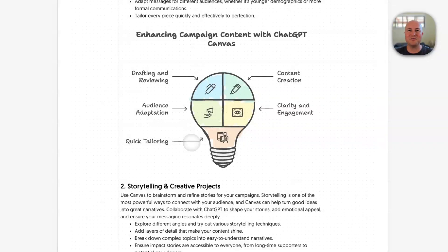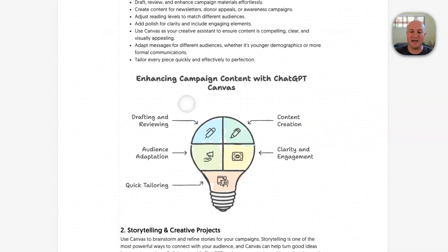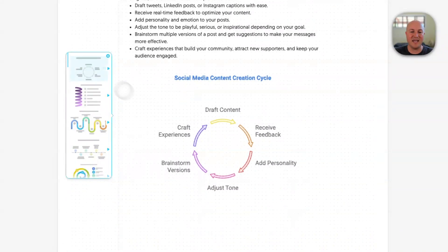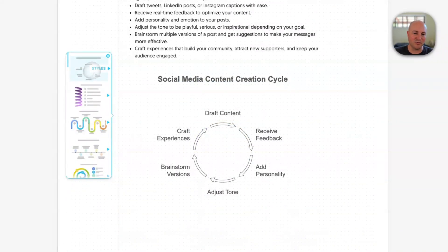AI is a really helpful tool in personalizing the way we consume information, whether that's an audio version through something like ElevenLabs or Google's NotebookLM, where you can now turn content into a personalized podcast — which is incredible. Or instead of text-based, we can now leverage something like Napkin and turn it into visuals as well.